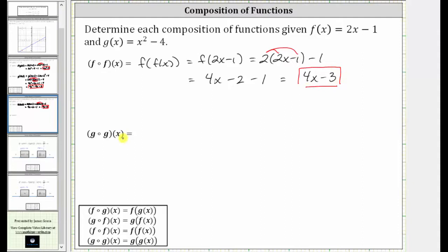Next, we have g of g of x, which we write using the alternate form. Now, beginning with the inner function, again, notice how we don't have a numerical value to sub into g of x, and therefore we substitute the function rule for g of x, which is x squared minus 4, which gives us g of the quantity x squared minus 4.